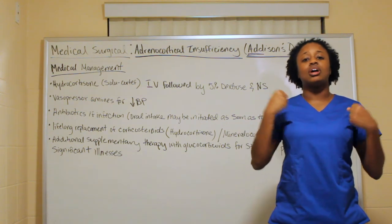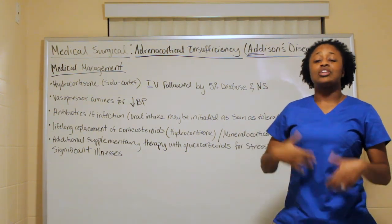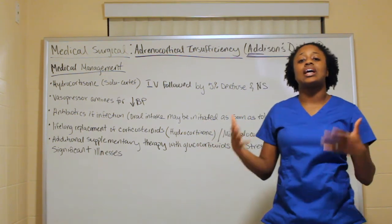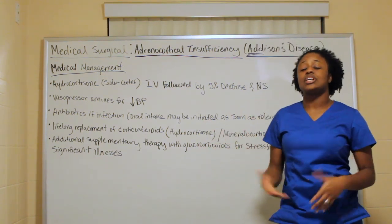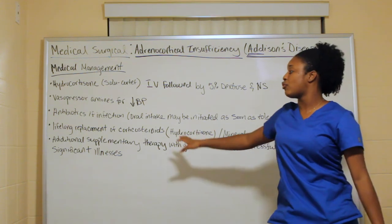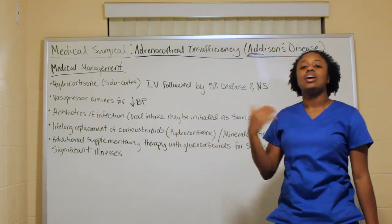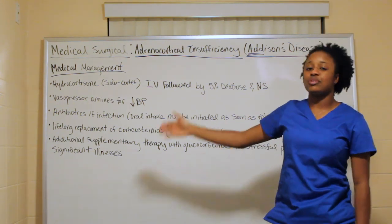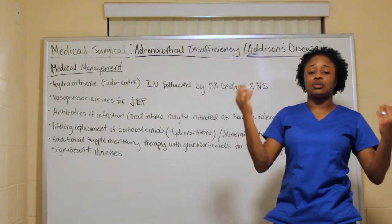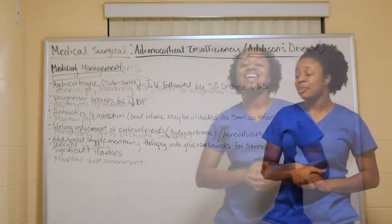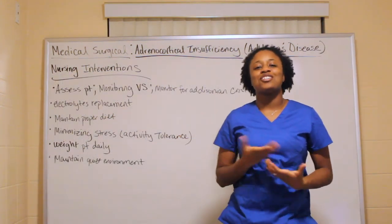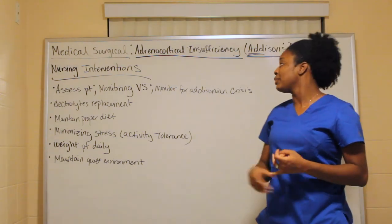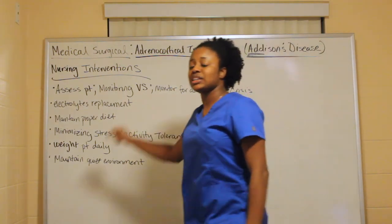During stressful activities, the body normally releases cortisol and glucose to cope with stress, but Addison's patients can't do this. So supplementary therapy is given when they undergo procedures or have a significant illness, because the body is under a lot of stress.